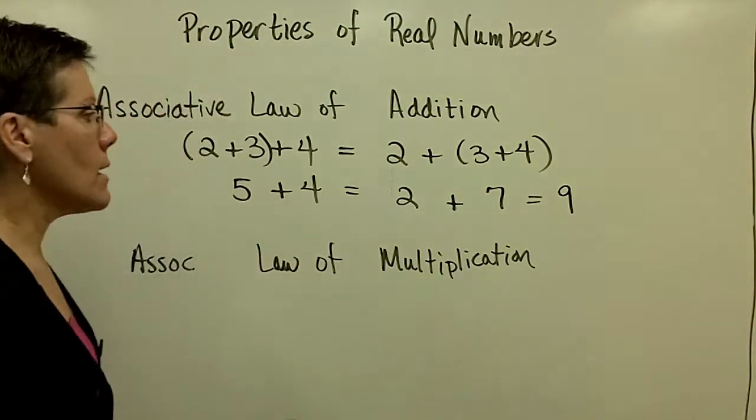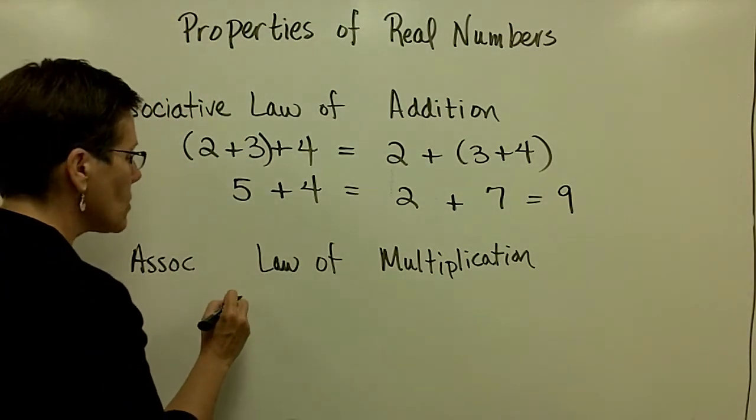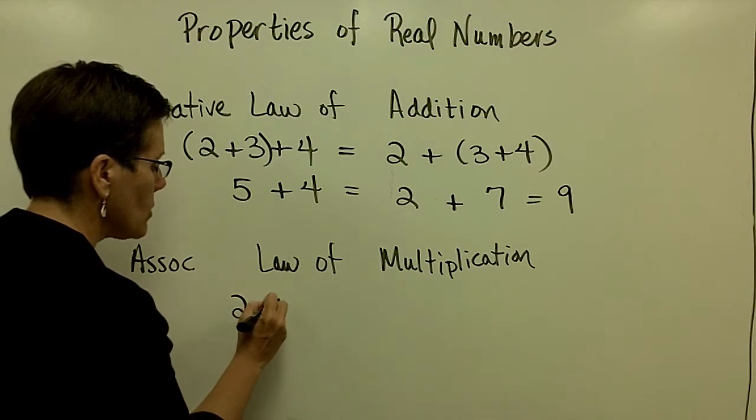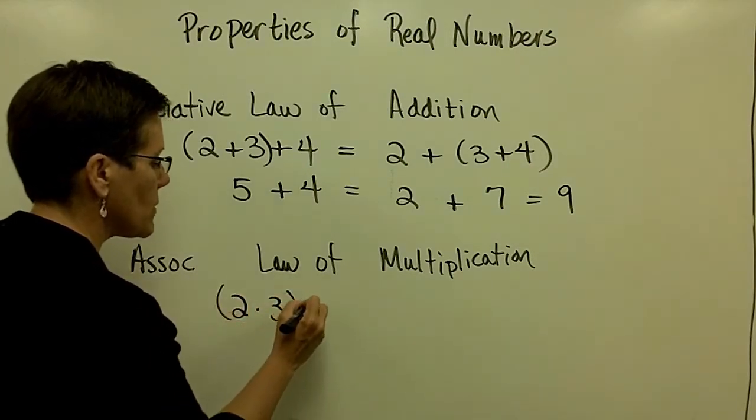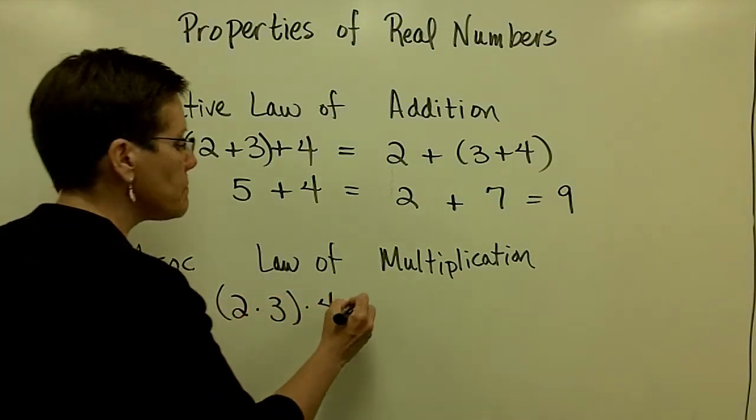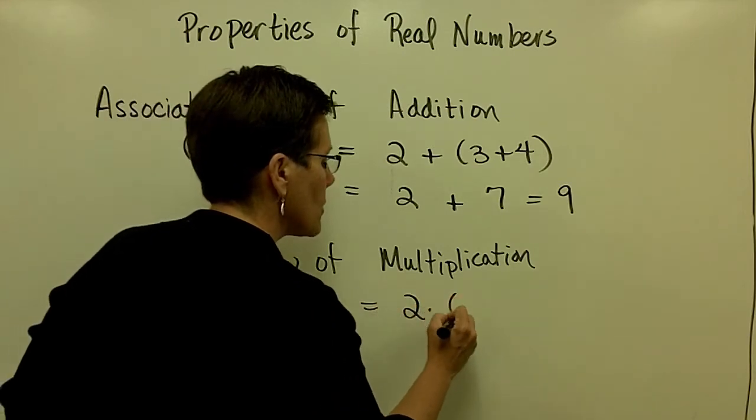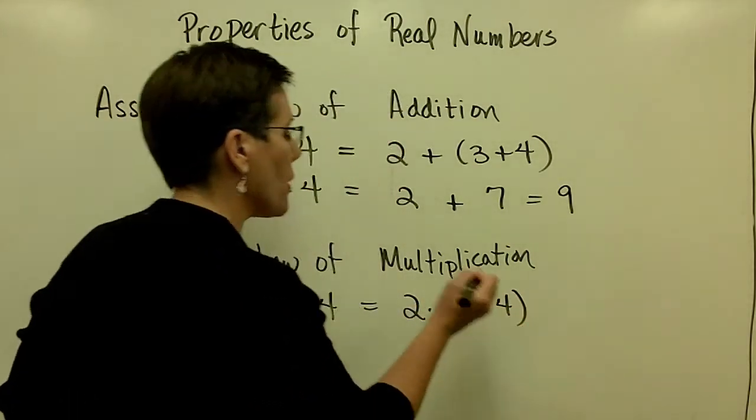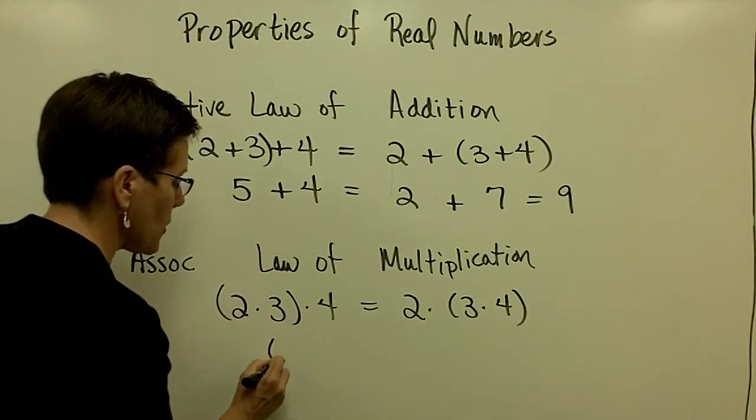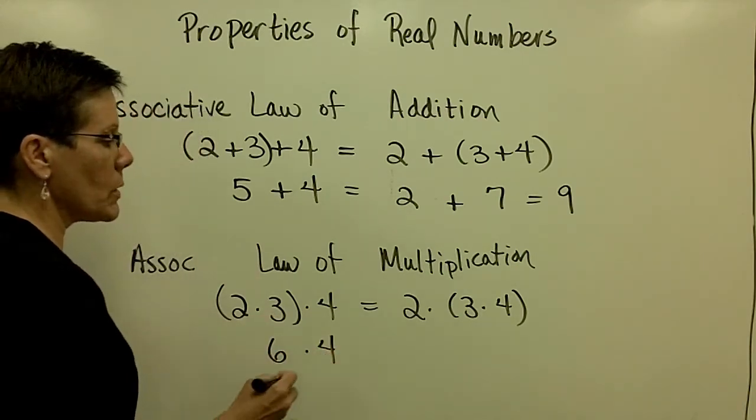And that is 9 in this particular case. So I could group 2 times 3 in a set of parentheses and then multiply it by 4. Or I could group the 3 and the 4 and then multiply it by 2. Here, in the parentheses first, 6 times 4 is 24.